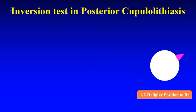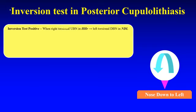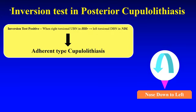In the inversion test for posterior cupulolithiasis: the right half-Alpike position is shown in this diagram. As the nose-down to the left is done, a positive inversion test means the right torsional upbeating nystagmus in the right half-Alpike position becomes left torsional and downbeating on nose-down to the left. This is suggestive of adherent type of cupulolithiasis.